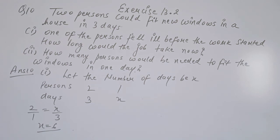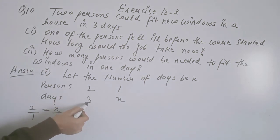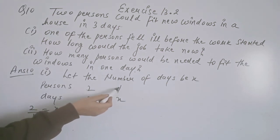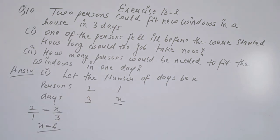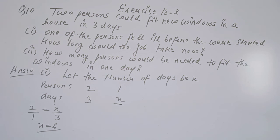First, the total number of persons is 2 who fit the window in 3 days. If one person has a problem and cannot work, only 1 person remains. The number of persons and number of days are inversely proportional. So 2 divided by 1 equals 3 divided by x, giving x = 6 days.